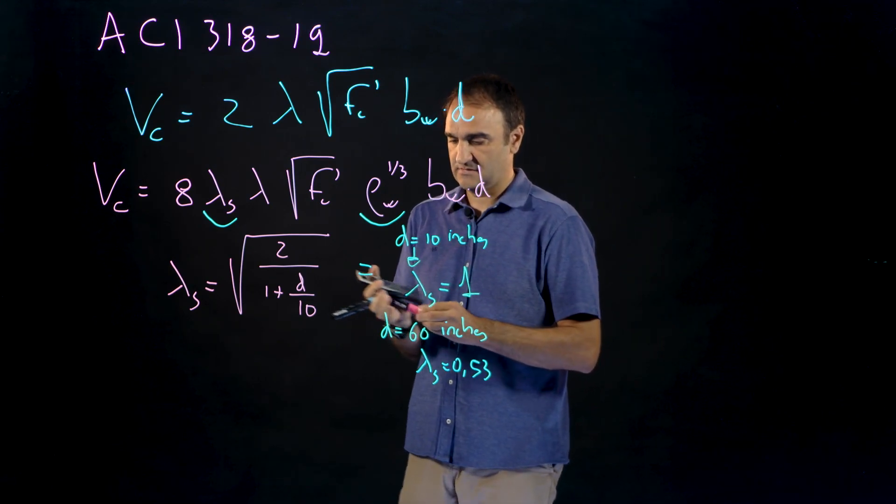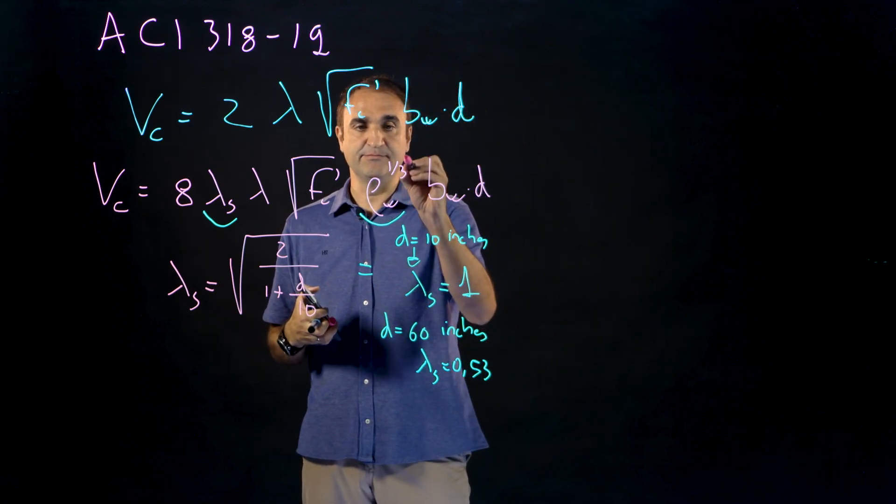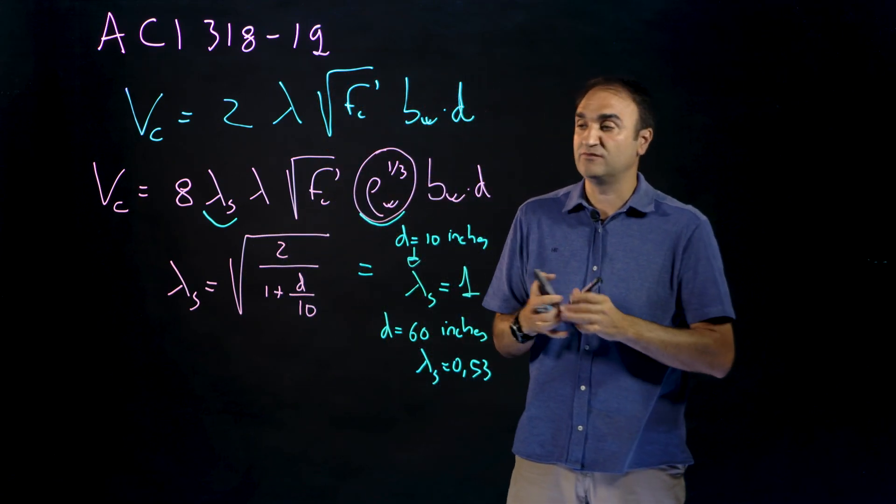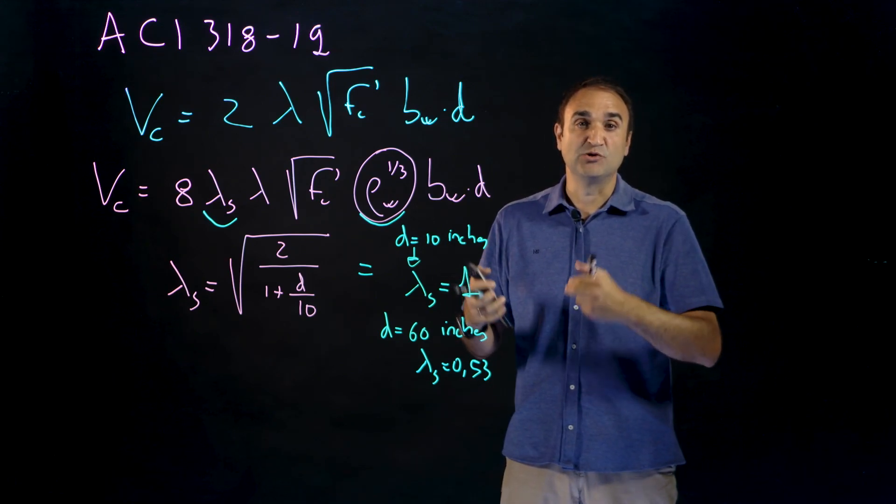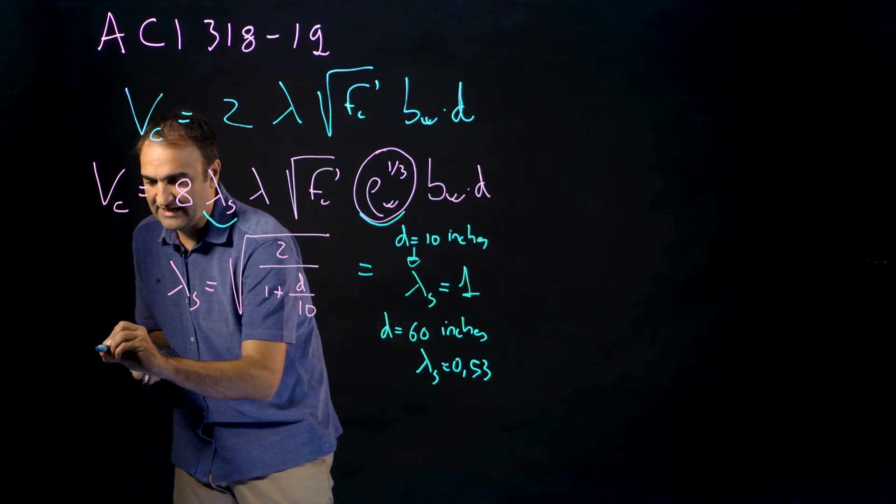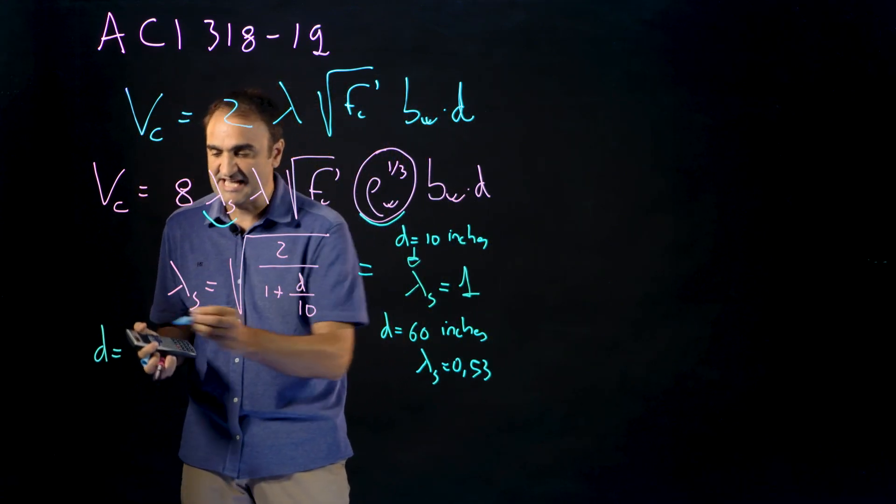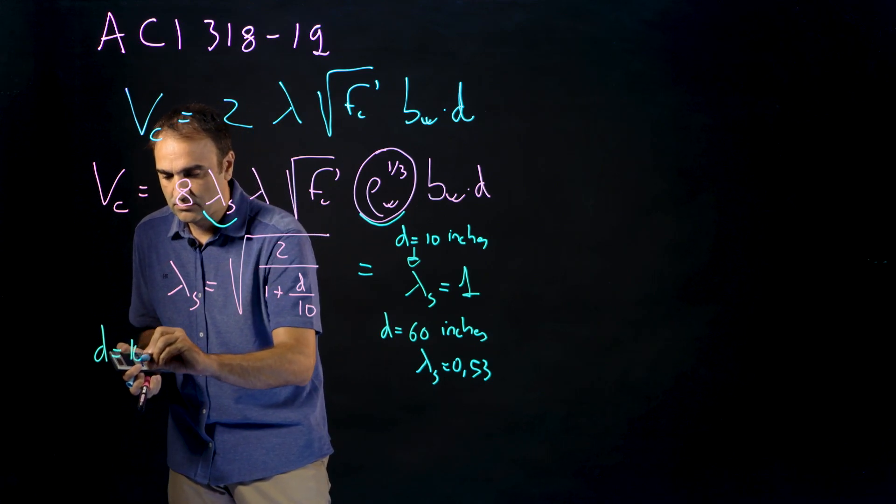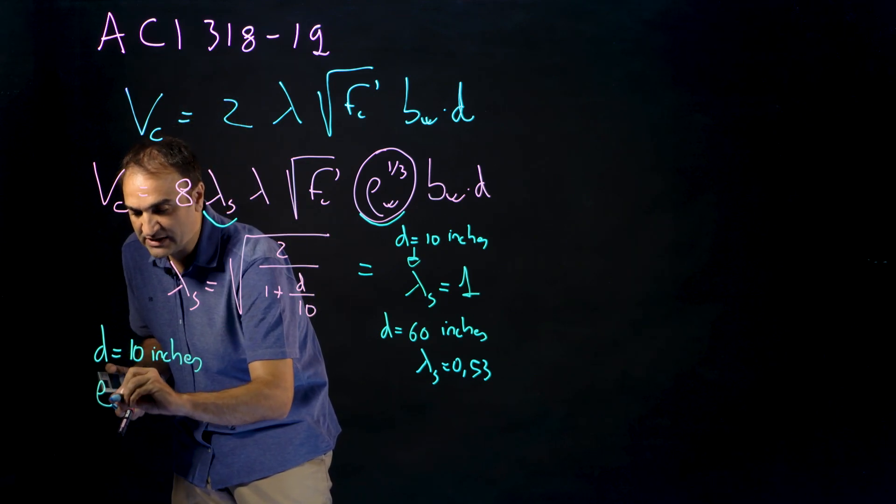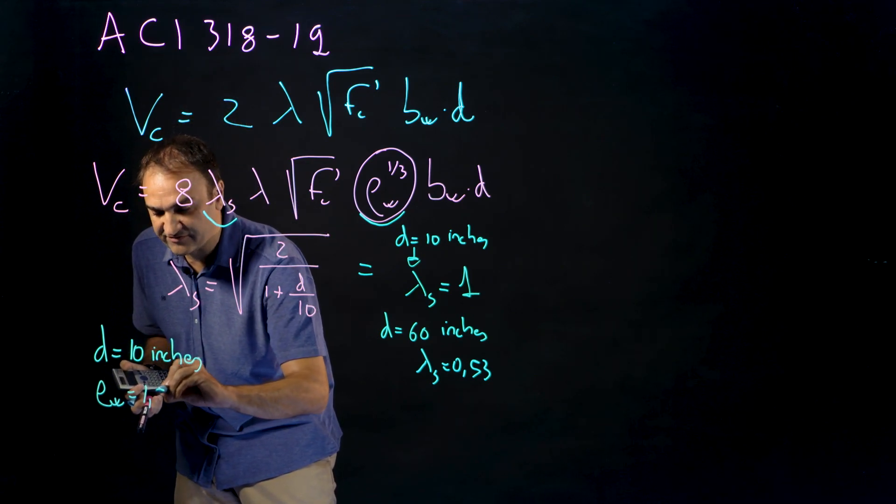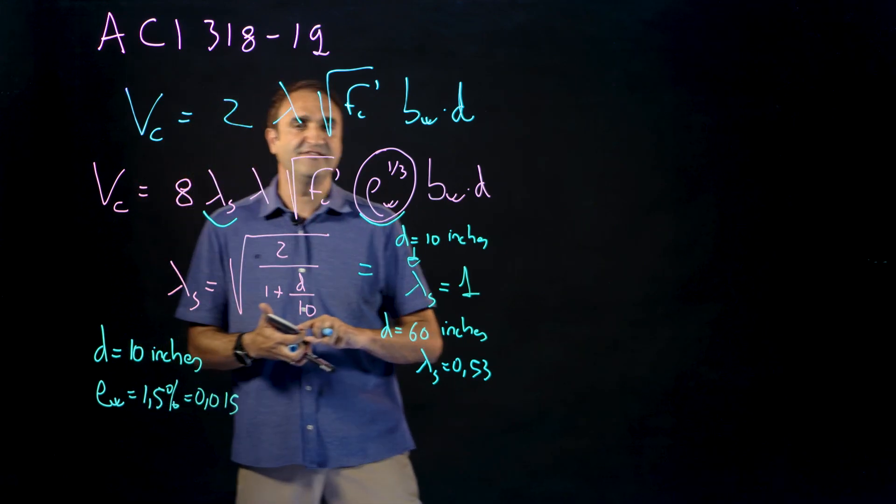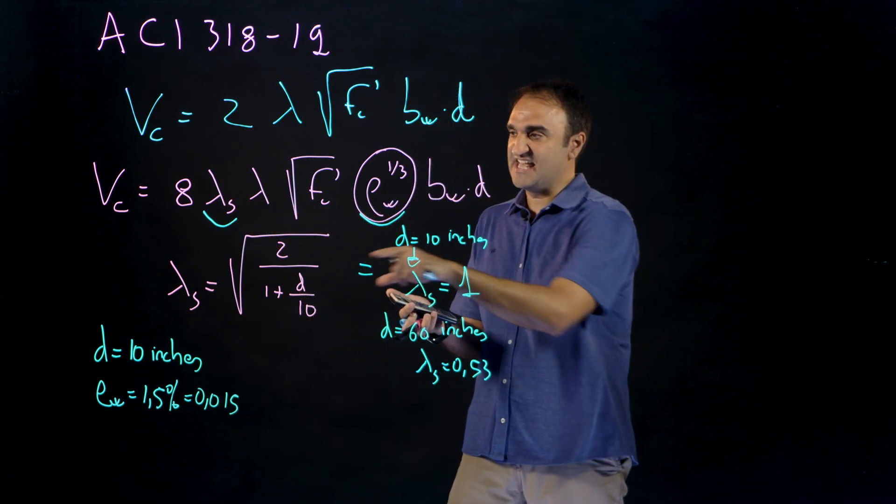And then also this term it's important because this term here for slab with a low amount of longitudinal reinforcement, the shear strength is going to be lower. In fact, let's consider a slab with effective depth equal to 10 inches and a longitudinal amount of 1.5 percent, so 0.015.